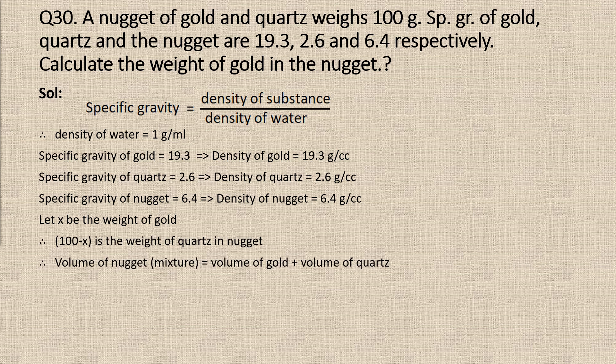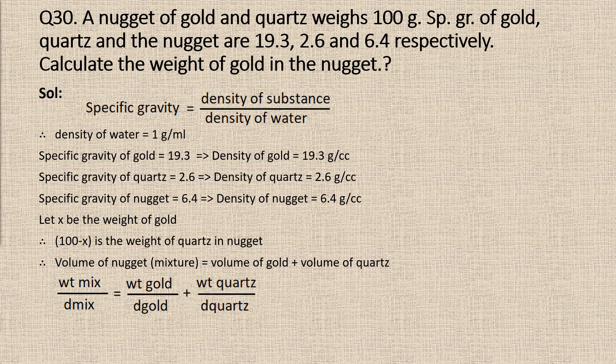Volume of the nugget is equal to volume of gold plus volume of quartz. Since density equals mass divided by volume, volume equals mass divided by density. So, volume of the nugget equals weight of the mixture divided by density of the mixture, volume of gold equals weight of gold divided by density of gold, and volume of quartz equals weight of quartz divided by density of quartz.